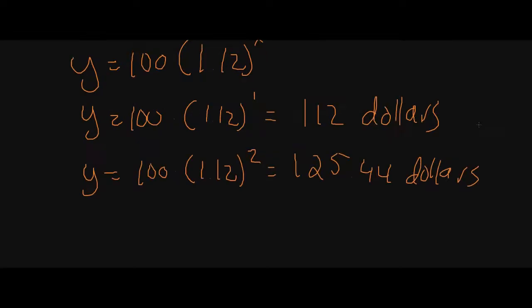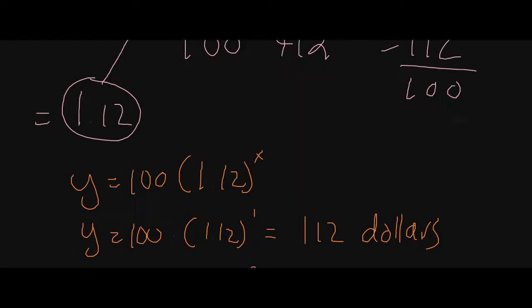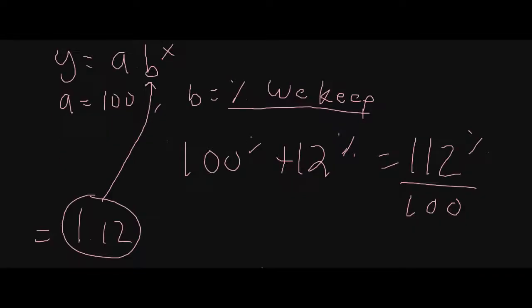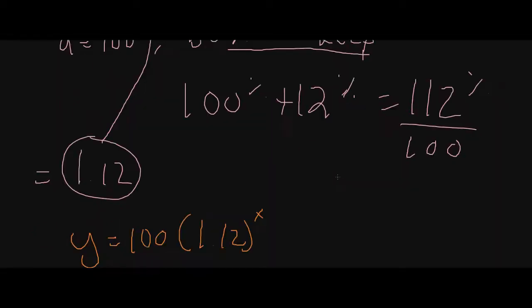So this is how we write it using exponential equations. The a is our starting value and b is the percentage we keep — we're keeping 100% of its value plus 12% of its value.